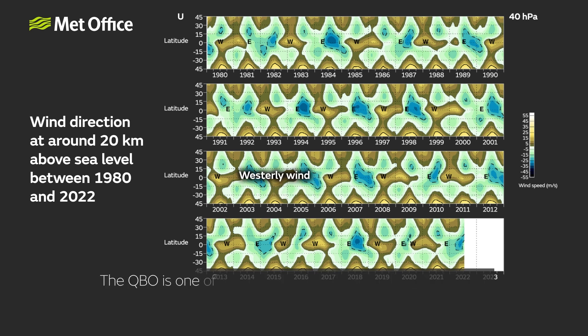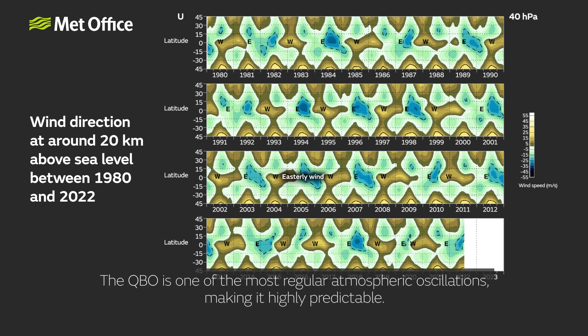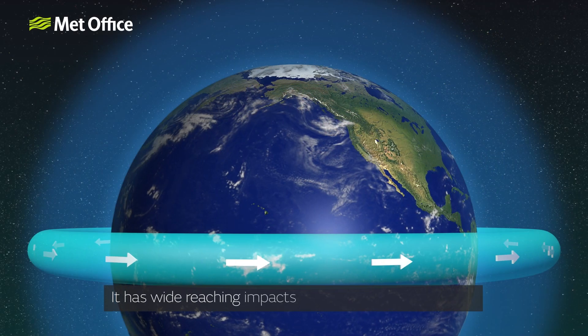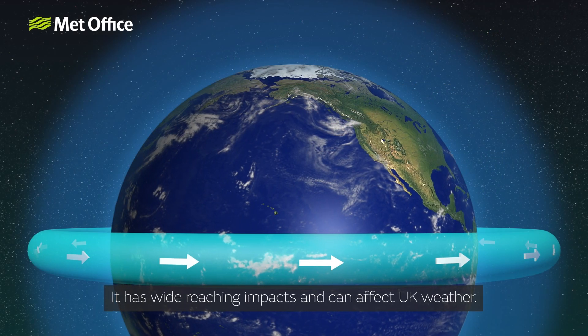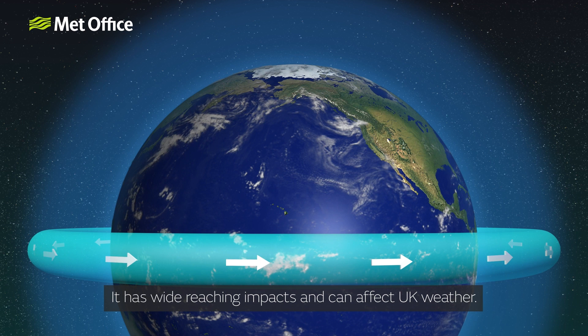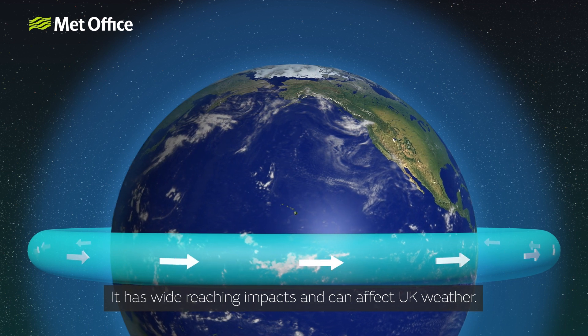The QBO is one of the most regular atmospheric oscillations, making it highly predictable. It has wide-reaching impacts and can affect UK weather.